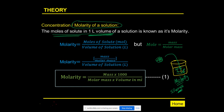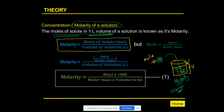If I know the volume V of the solution and the moles of solute, I can use the equation: molarity = moles of solute divided by volume of solution. Since moles cannot be measured directly in the lab, we use the formula mole = mass of solute divided by molar mass, and substitute to get our final equation.